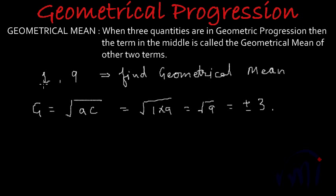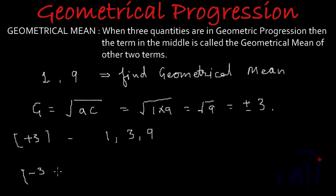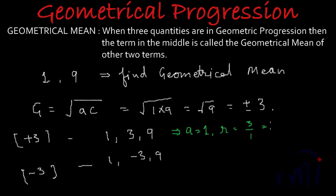So if we are given two terms like 1 and 9, there can be two geometrical means — one will be plus 3 and another will be minus 3. If we put plus 3, the series becomes 1, 3, and 9. If we take minus 3, the series becomes 1, minus 3, and 9. In the first case, a equals 1 and r equals 3 by 1, or 9 by 3, both giving r equals 3.